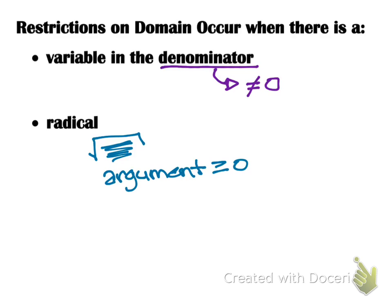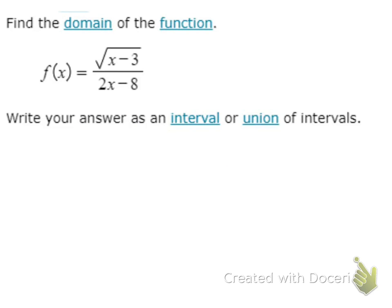Let's look at a few examples. Here, we have a radical and a square root, so let's deal with the radical first. We need x minus 3 to be greater than or equal to 0, so x will be greater than or equal to 3.